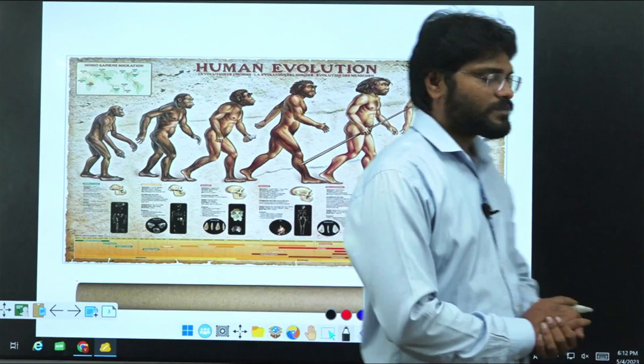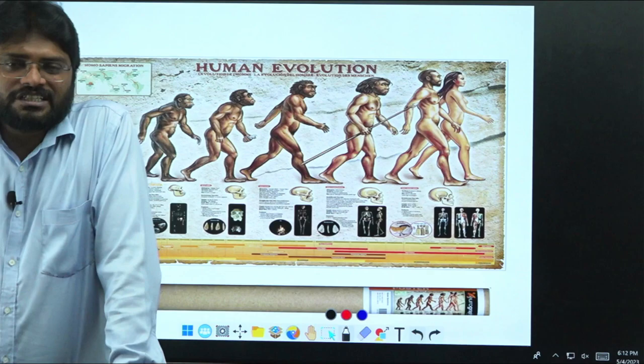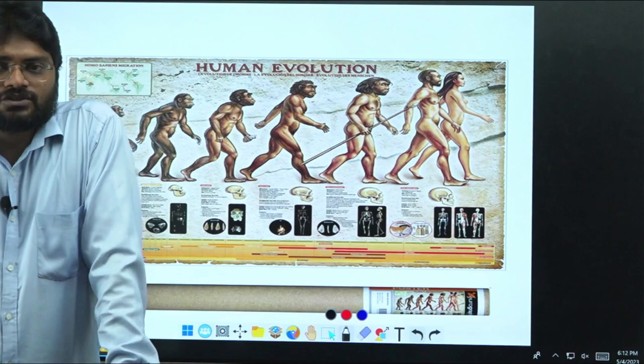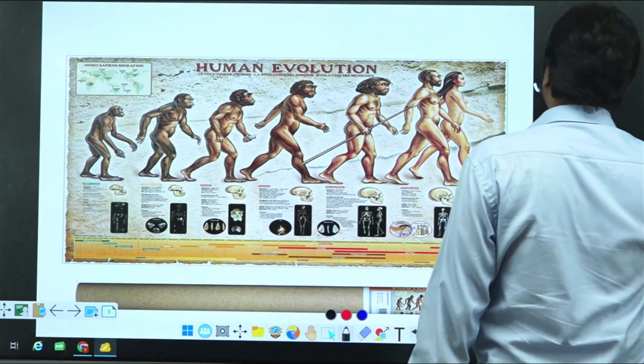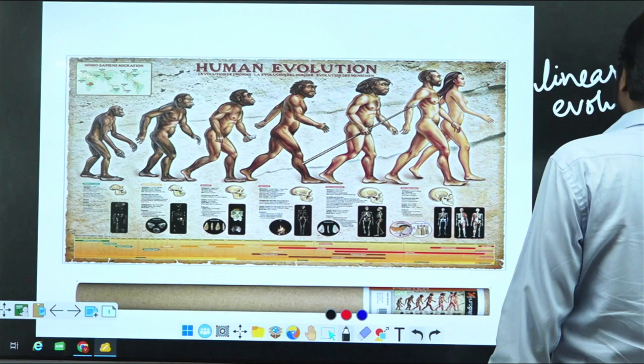By seeing this image, can you identify any flaw? Everywhere human evolution is portrayed in this manner. This kind of representation we call linear evolution.